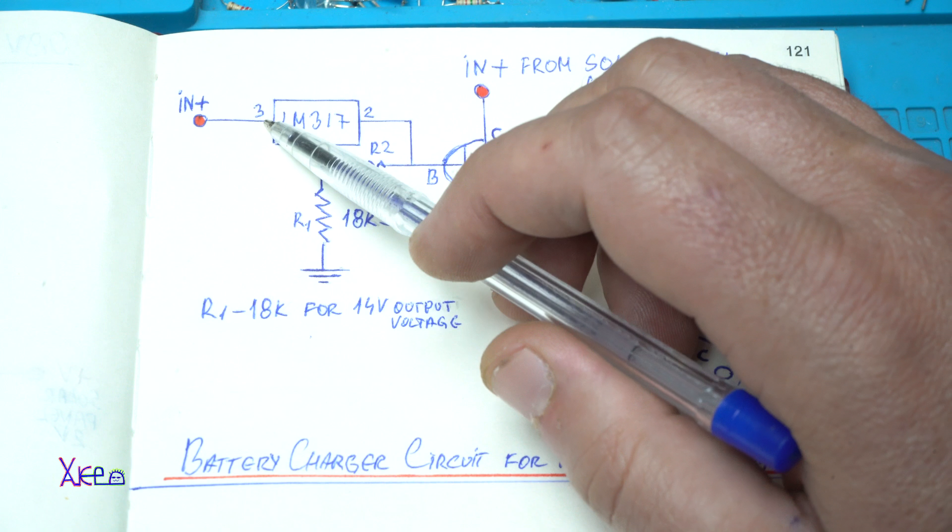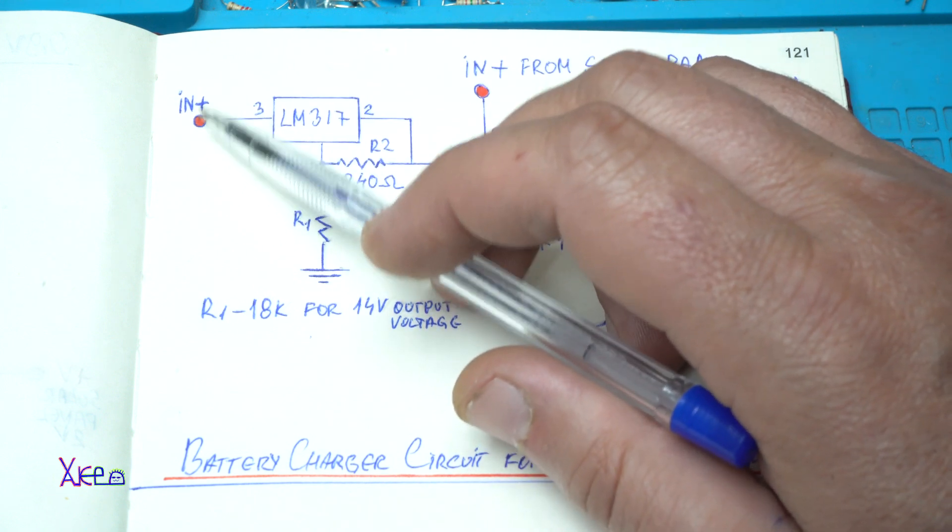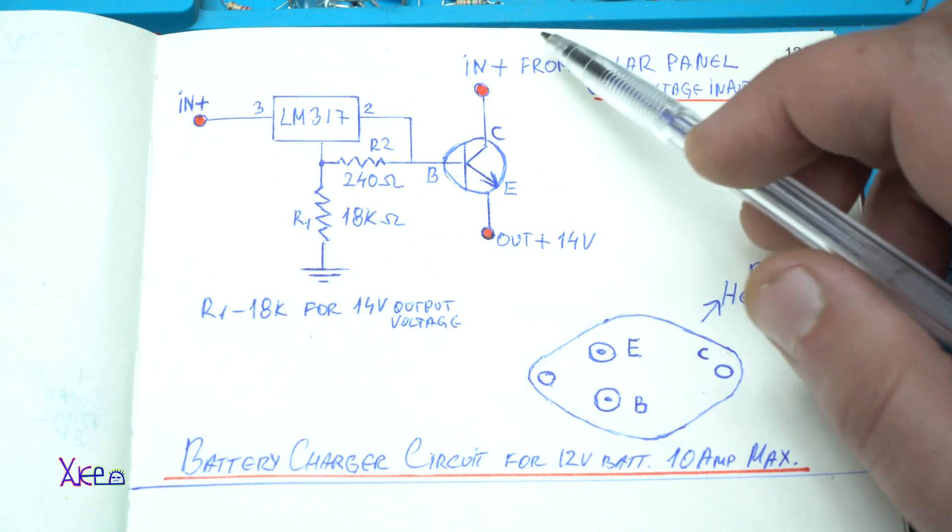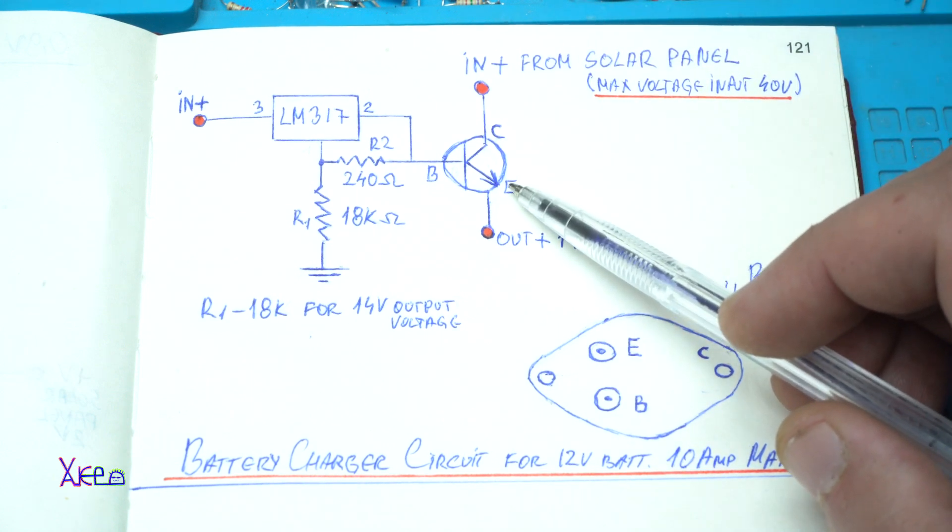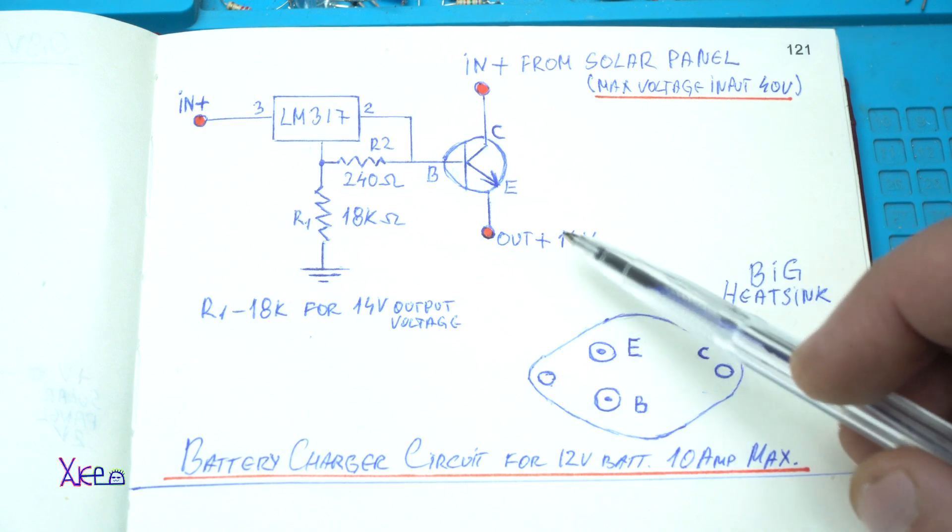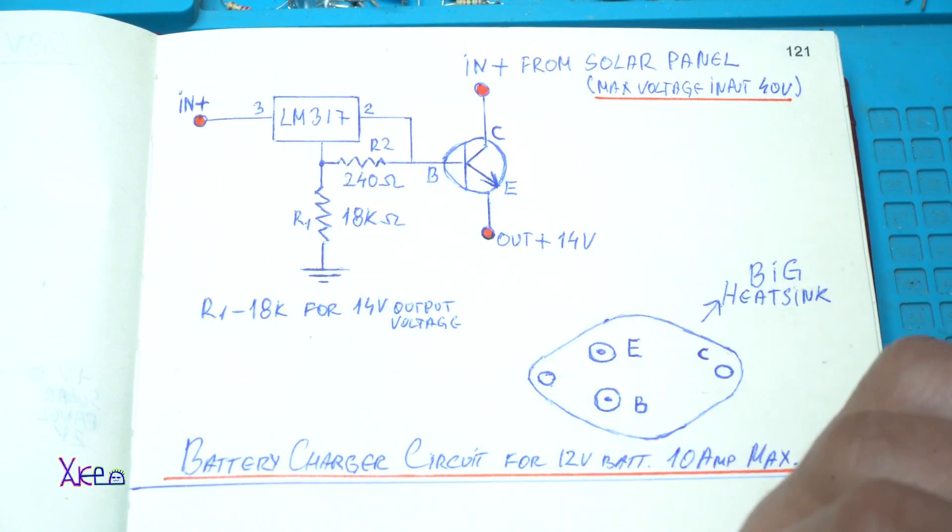Also on pin number 3 of the LM317 we have input voltage from the solar transistor, and on the emitter of the N-P-N transistor we have output of 14 volts. This is ground.